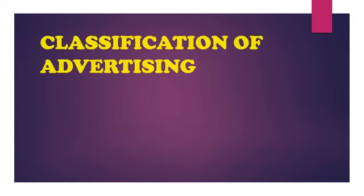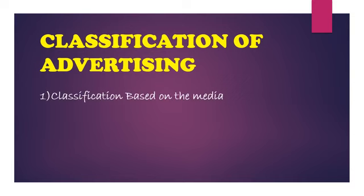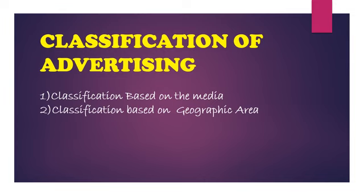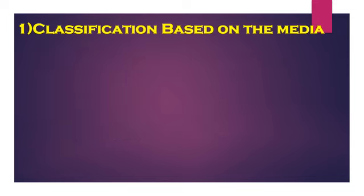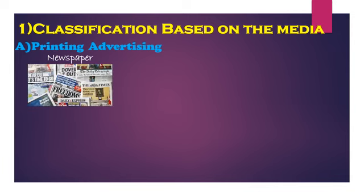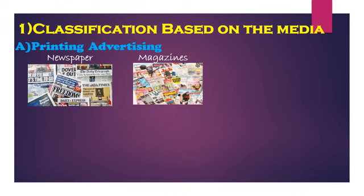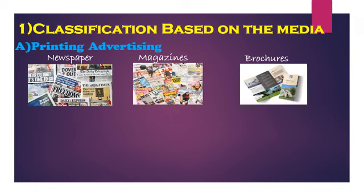Now let's begin the classification of advertising. There are many types and they can be done in many ways. The four best ways are: classification based on media, classification based on geographic areas, classification based on target audience, and modern advertising. Based on media, the first is print advertising — through newspapers, which come to know very first, and are nowadays colorful and attractive. Then magazines — for kids, for females, sports magazines, and political magazines.